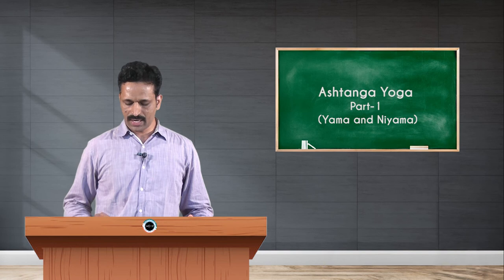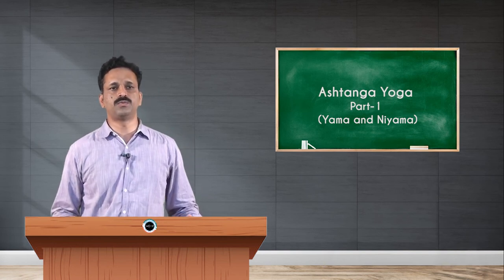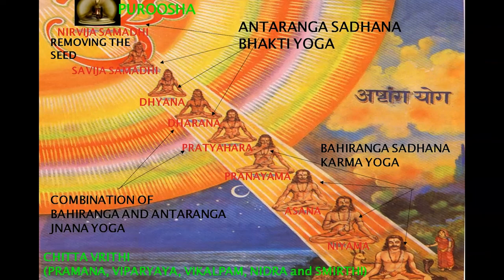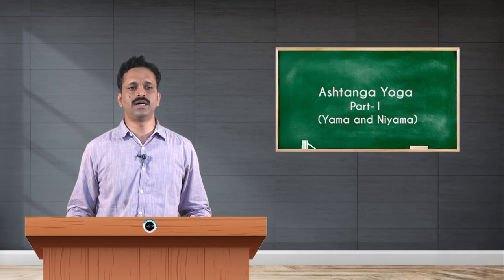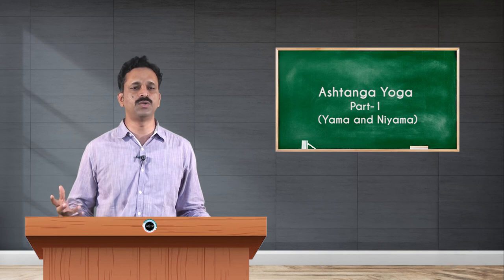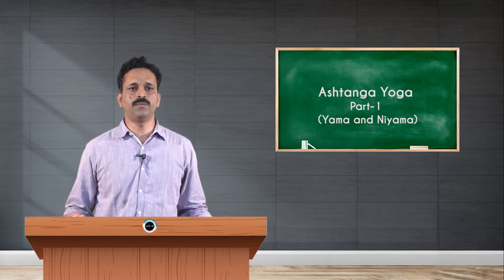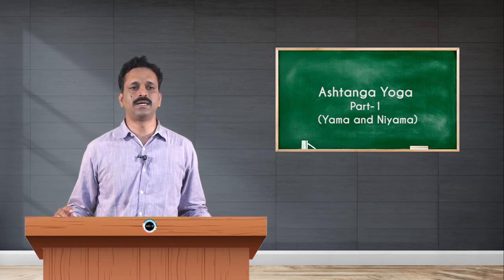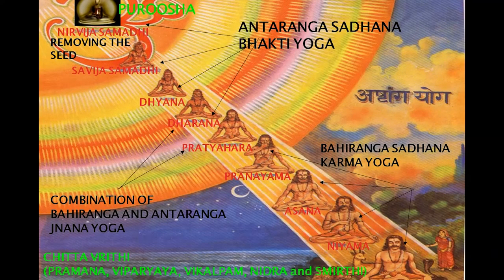These eight stages are divided into three Sadhanas. The first is Bahiranga Sadhana, the second is Antarabahiranga Sadhana, and the third is Antaranga Sadhana. Bahiranga Sadhana is also called Karma Yoga and comprises Yama, Niyama, Asana, and Pranayama. Whatever practice you are doing externally, people can see you and observe the changes.